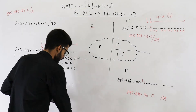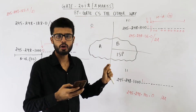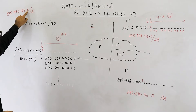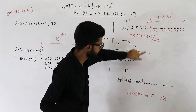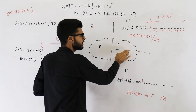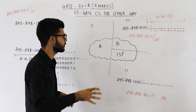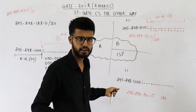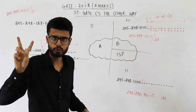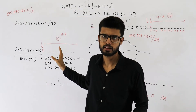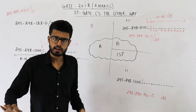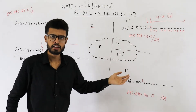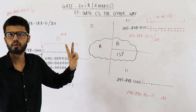Now looking at all the options, none of them says that organization A will have 245.248.128.0/21 and organization B will have one of these /22 subnets. So is all of this incorrect? No — this question can have two correct answers. What we calculated is correct, but it is not present in the options. The options contain the other valid answer. Everything taught so far is correct: step one divides into two parts, one goes to A, the other is again divided — fix one bit for A's side, fix two bits for B's side.